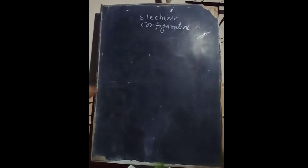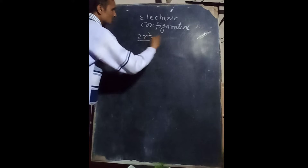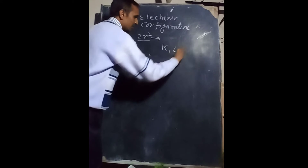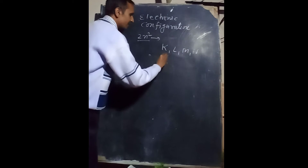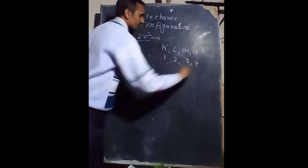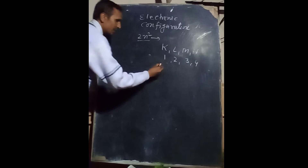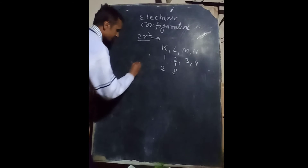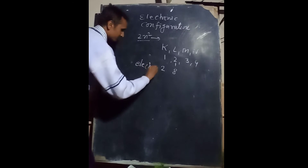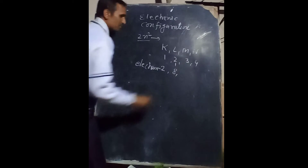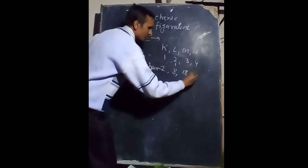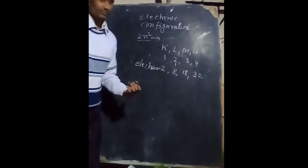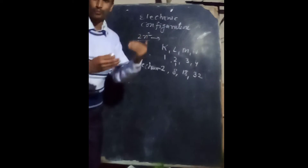According to Niels Bohr, the formula is 2n² electrons filled in the orbits. The orbits are K, L, M, N — or you can say 1, 2, 3, 4. In the first shell K, there are only two electrons. In L shell there are eight electrons. In M shell there will be 18 electrons, and in N shell there will be 32 electrons.